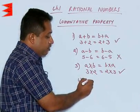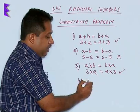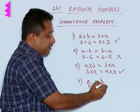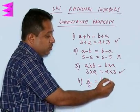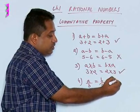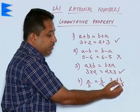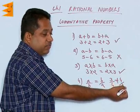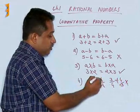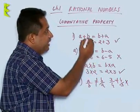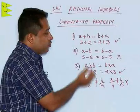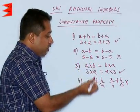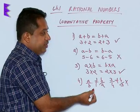The last case we are going to check is for division. Is A by B, that is A divided by B, the same as B by A? The answer is no, because 3 by 4 is not the same as 4 upon 3. 3 divided by 4 is something else and 4 divided by 3 gives a different value; they are not equal. So, the commutative property is true only in case of addition and multiplication.